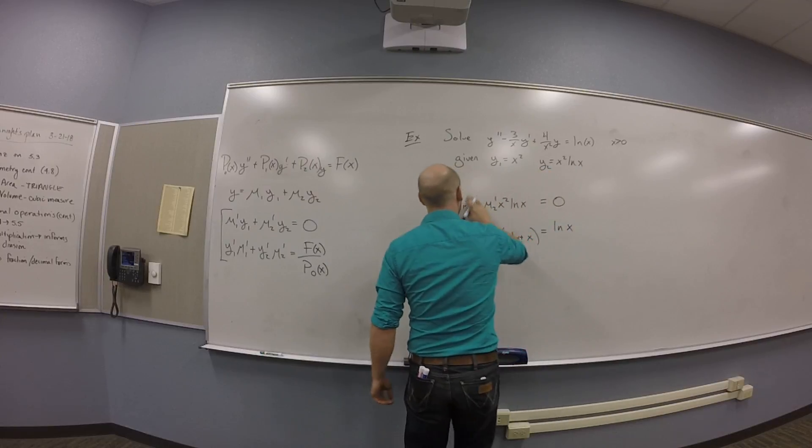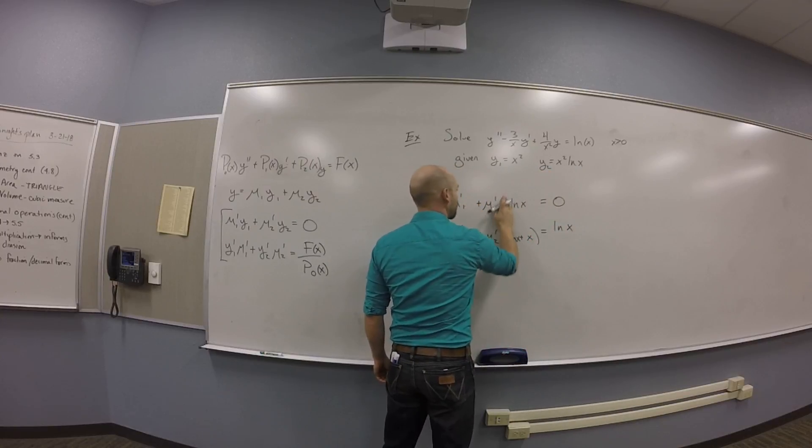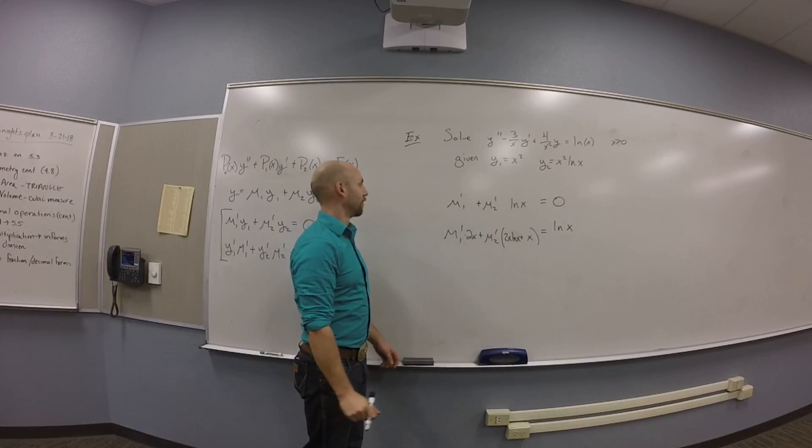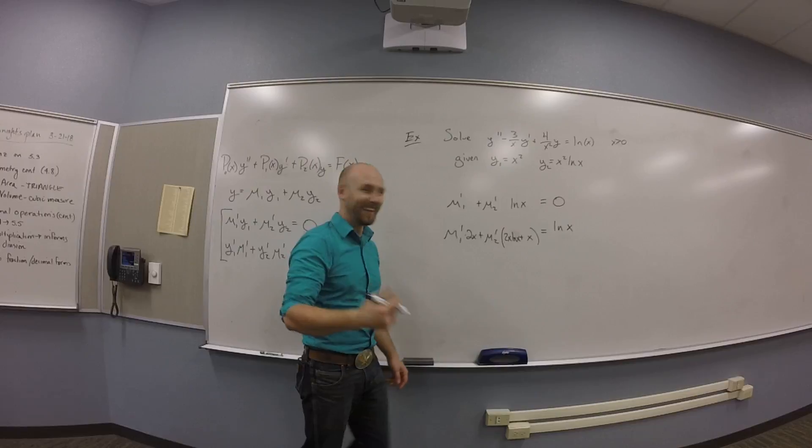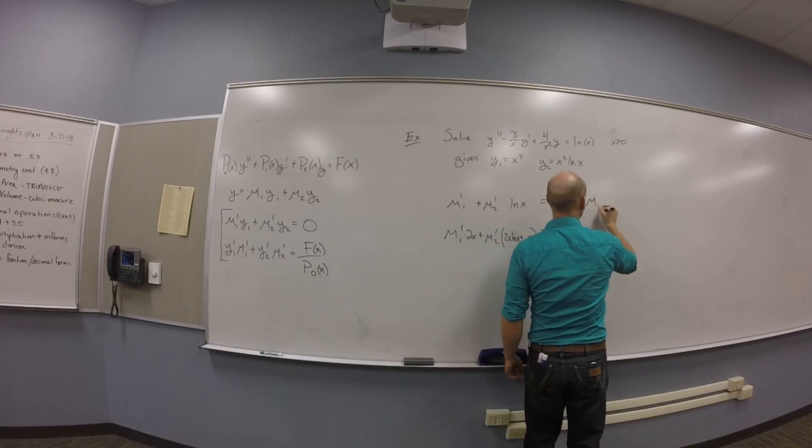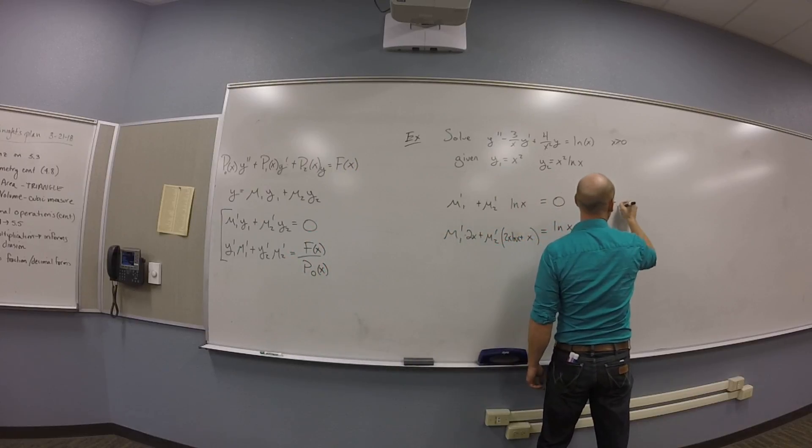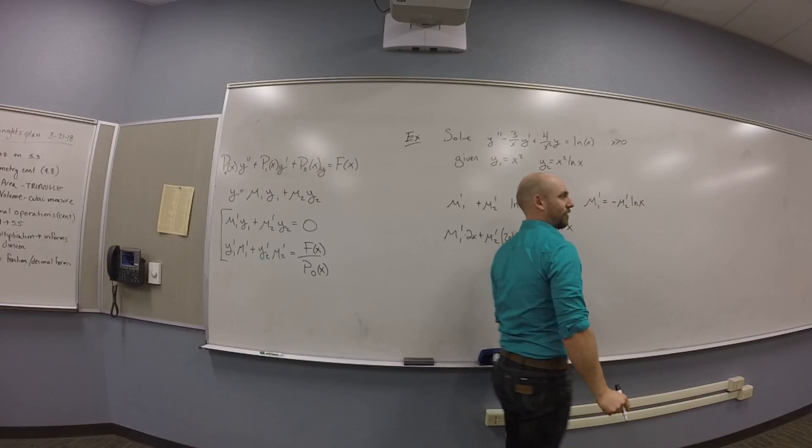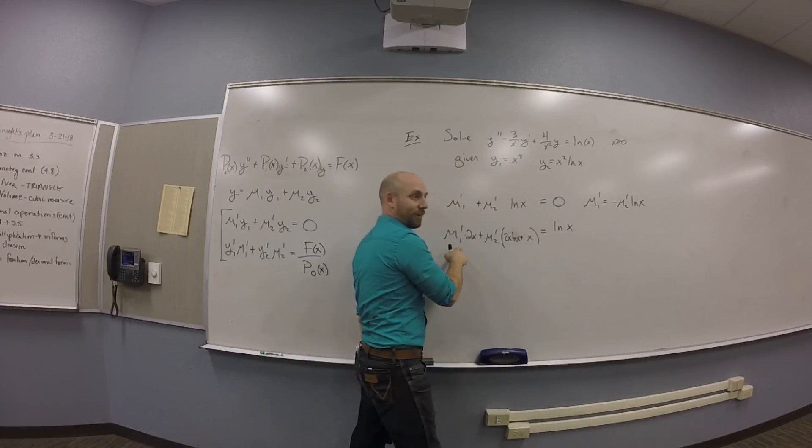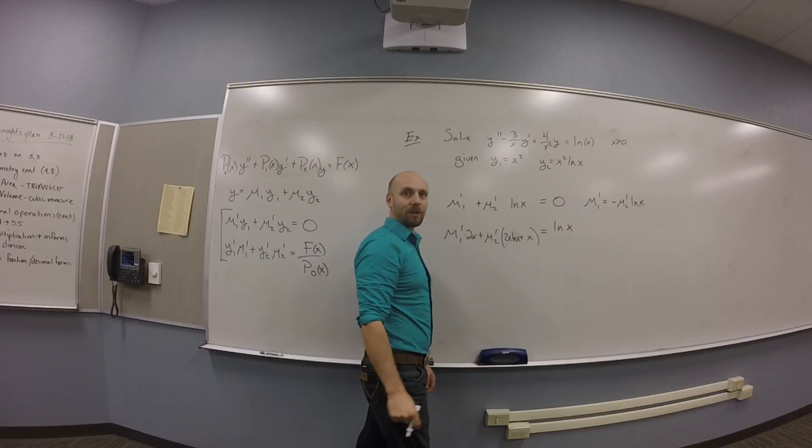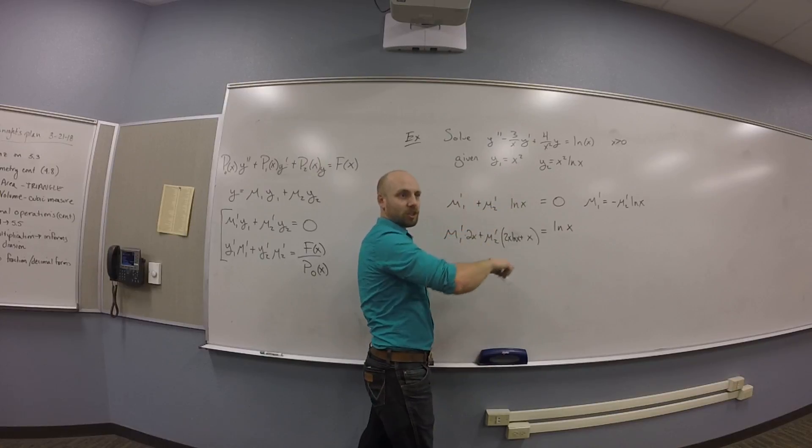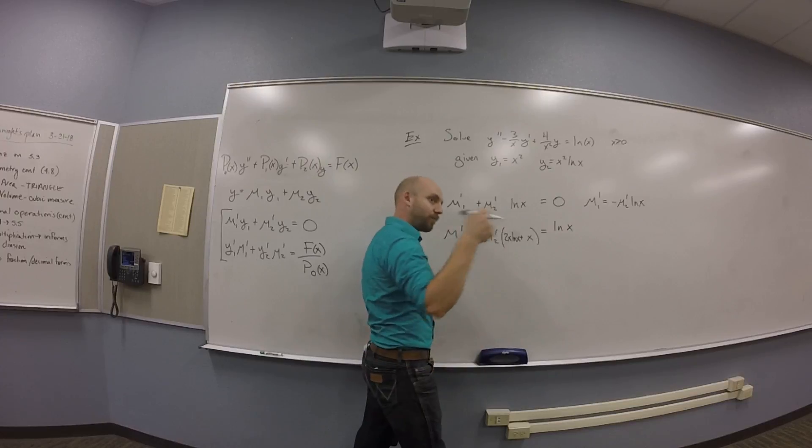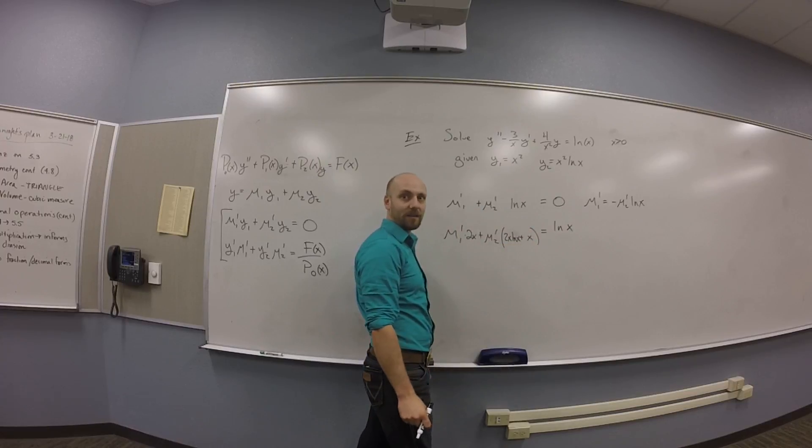So, if I divide this whole equation by X squared, I get mu1 prime plus mu2 prime log X is 0. So, mu1 prime is negative mu2 prime log X. Okay. So, take that, shove it in here. This is why you don't bother to remember the big formula, because usually it's easier to solve this by looking at it than it is by doing the crank that they made in the book.